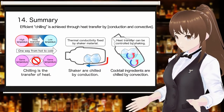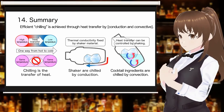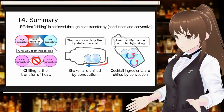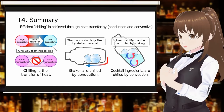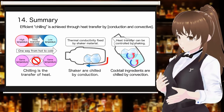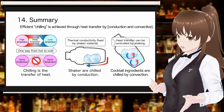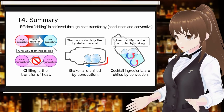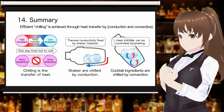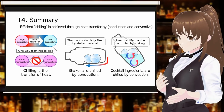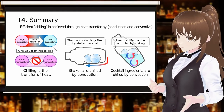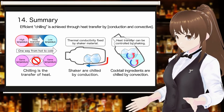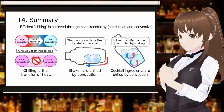In this video, I explained the principle of chilling. Chilling is the transfer of heat from the hot side to the cold side. Shakers, which are solids, are chilled by conduction, and cocktail ingredients, which are liquids, are chilled by convection. Thermal conductivity is fixed by the material of the shaker, but the heat transfer coefficient can be controlled by shake technology.